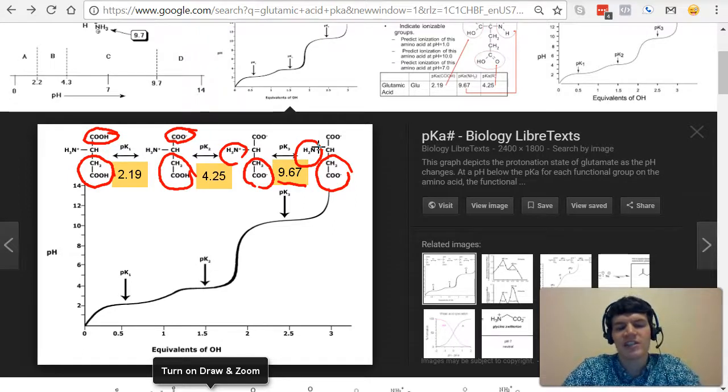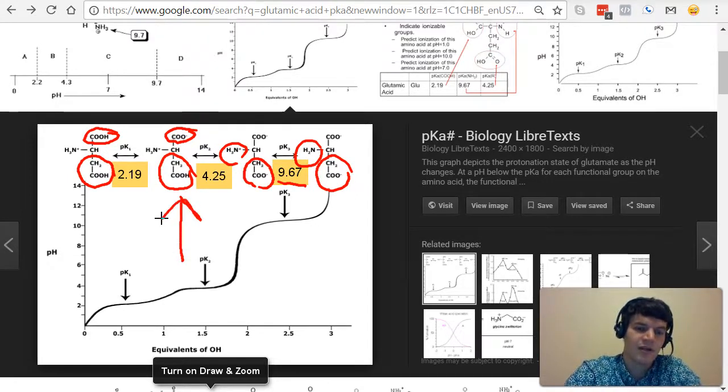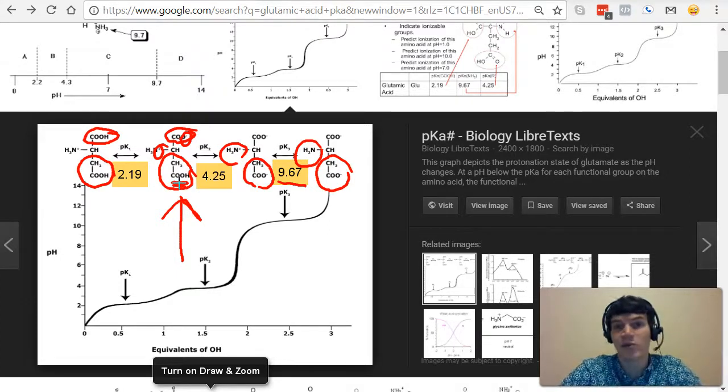Now that we understand the structure of this amino acid at various pHs, we can quickly determine the isoelectronic point. Take a quick look at these different species of the amino acid. Which one is neutral? Exactly. It's this one right here. Notice it has a positive charge on the amino group and a negative charge on the carboxyl group and a neutral charge on the R group. The plus charge and the minus charge will cancel out, leaving us with a neutral charge overall.